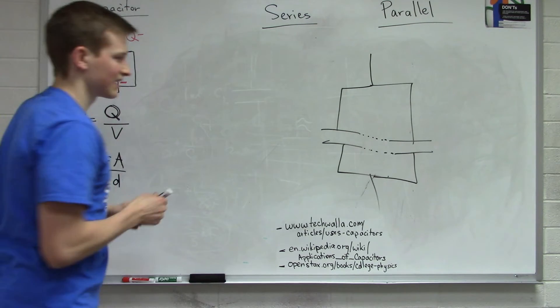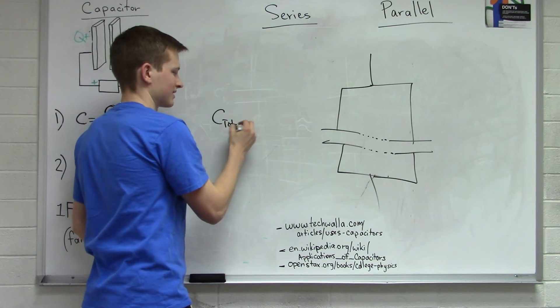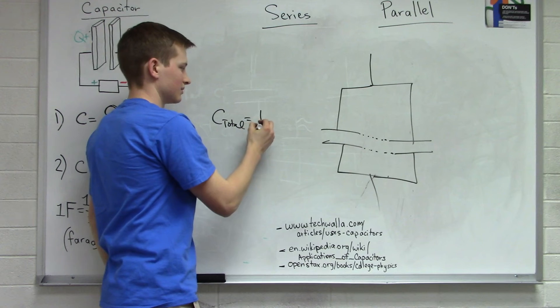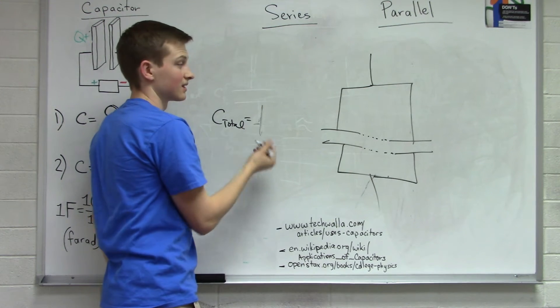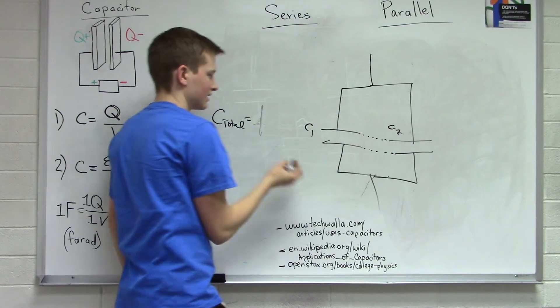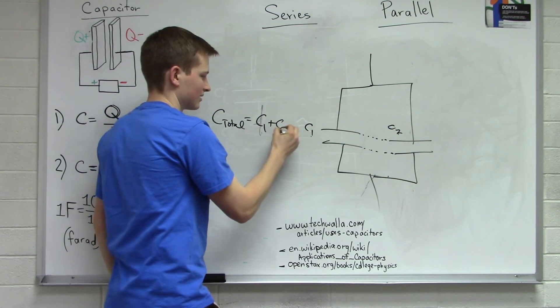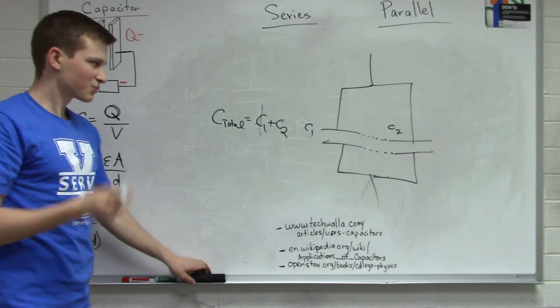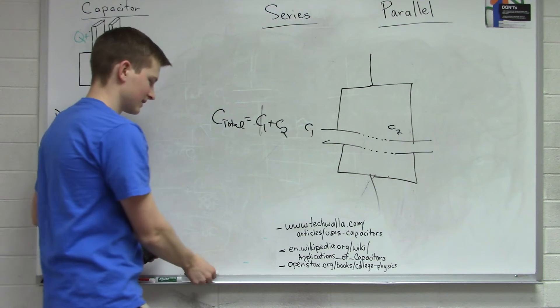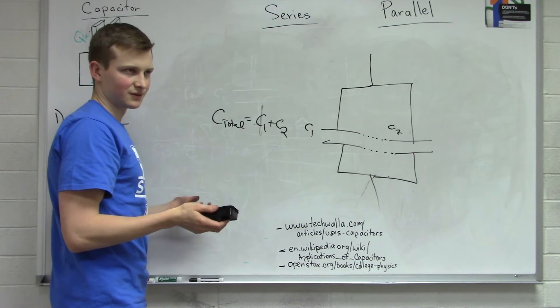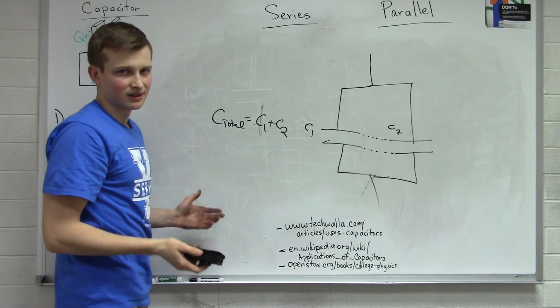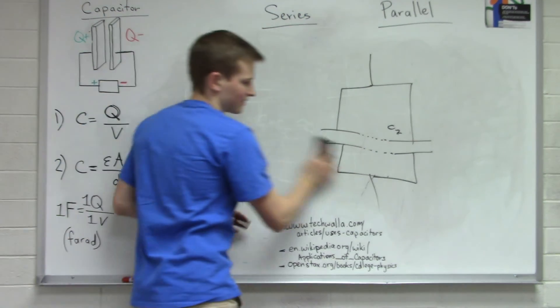So it would make sense that the total capacitance for capacitors in parallel is equal to the sum of that C1 and that C2. So that's pretty straightforward. I don't think I need to give an example of values. But it can get a little complicated if we combine capacitors in series and capacitors in parallel within the same circuit. So let's give an example of that.